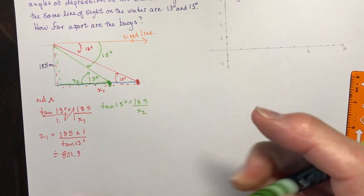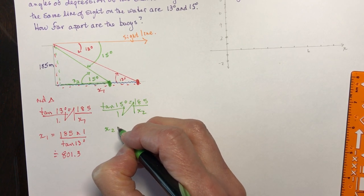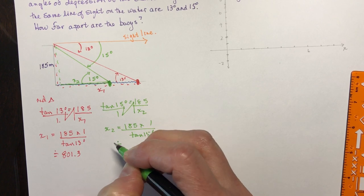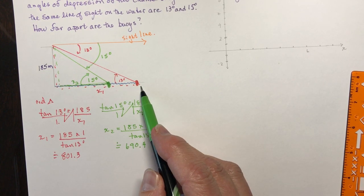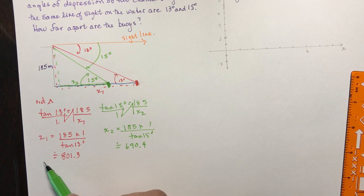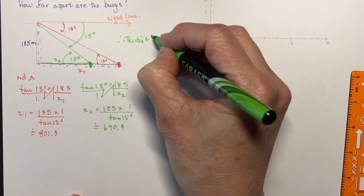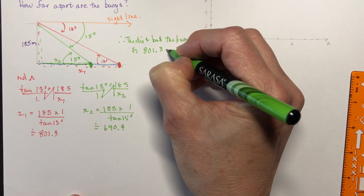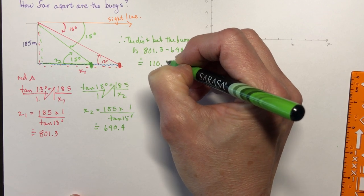x1 equals 185 divided by tan 13, giving approximately 801.3. x2 equals 185 divided by tan 15, giving approximately 690.4. Therefore the distance between the two buoys is 801.3 minus 690.4, which is approximately 110.9 meters.